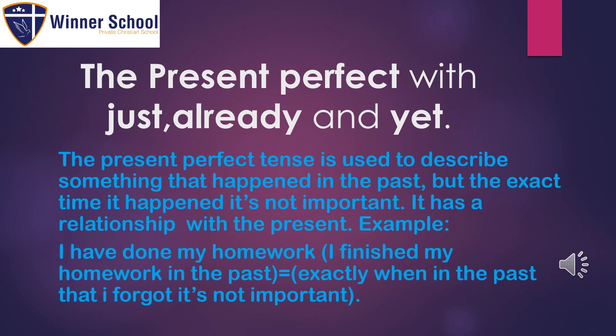The present perfect tense is used to describe something that happened in the past, but the exact time it happened is not important. It has a relationship with the present. Example: I have done my homework. I finished my homework in the past, and exactly when in the past is not important.